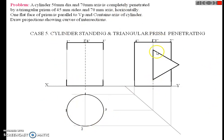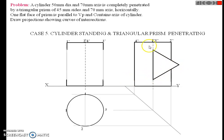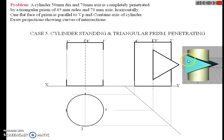Then the second step: draw the side view of the second solid. The second solid is the triangular prism, having a base of 45 mm and axis height of 70 mm. One flat face of this triangular prism is parallel to VP and contains the axis of the cylinder. This is the 45 mm edge — the 45 mm base.